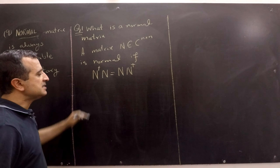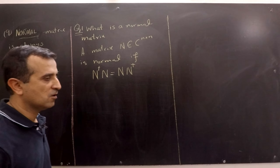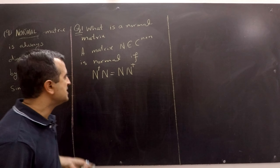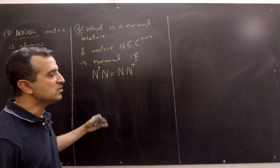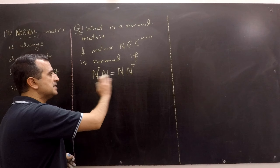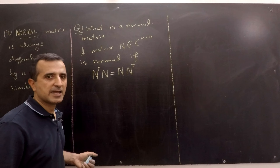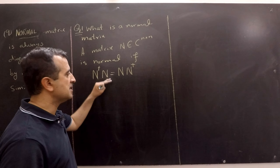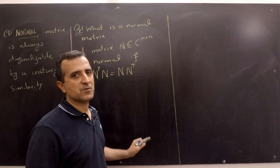...if N conjugate transpose times N is equal to N times N conjugate transpose. This definition looks very similar to the definition of unitary matrices, but there is one important thing missing. In the case of unitary matrices, this product is equal to the identity. However, in the case of normal matrices, it may or may not be equal to the identity.